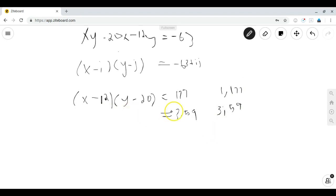If we take x minus 12 equals 177, then y minus 20 equals 1. So we have a possible solution, x equals 189 and y is equal to 21.